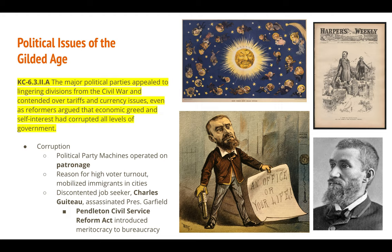During this period, political party machines operated on patronage — exchanging government jobs for votes. Party bosses would ensure everyone in their neighborhood voted for their party; in exchange, those voters received favors or government jobs. This is one reason voter turnout was among the highest in American history during the Gilded Age. Immigrants in cities were being mobilized by political machines, which helped them settle and find work, knowing that once immigrants became US citizens, they could be reliable voters.